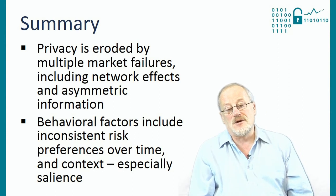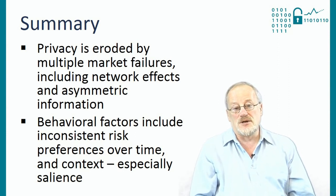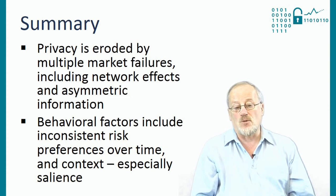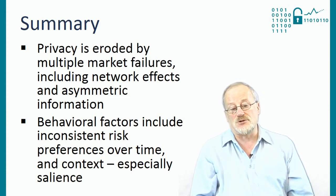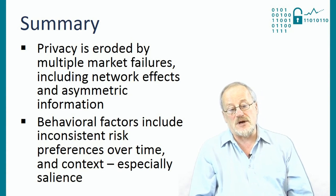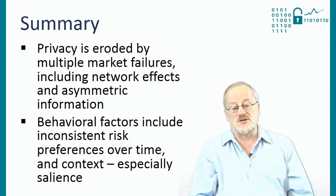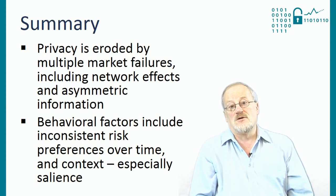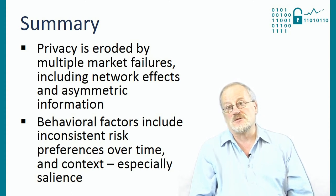In summary, privacy is eroded by multiple market failures of a classic economic type, including network effects and asymmetric information. But it's also eroded by behavioural factors, which include inconsistent risk preferences over time and context, of which salience is especially important and especially easy for websites to manipulate.